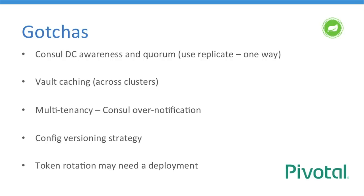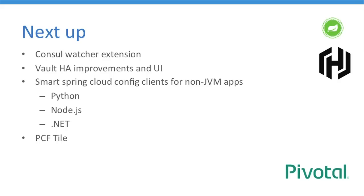Token rotation is also a challenge. If you want to revoke the token you've injected into your application, you may potentially have to redeploy — particularly in PCF or Docker environments where you can't control your instances. They get spun up at scale and you may have to go through a redeployment. Next up: we're working with HashiCorp to address the gotchas and get a UI app for the support team — an easy button mode. We're also working with Pivotal to set up smart sidecars for non-JVM applications — Python, Node, .NET — which we use extensively. And we're looking at the new PCF tile to spin up Spring Cloud Config Server on PCF.